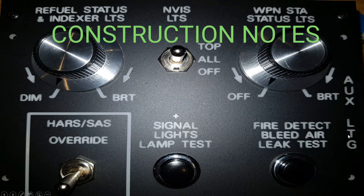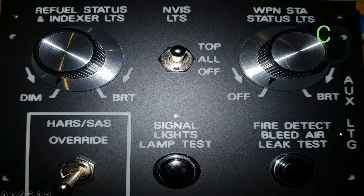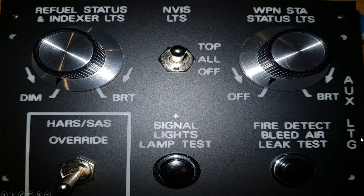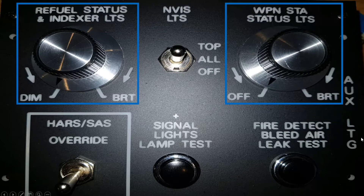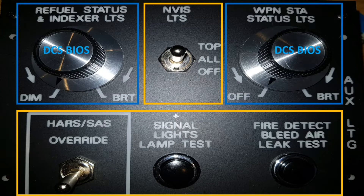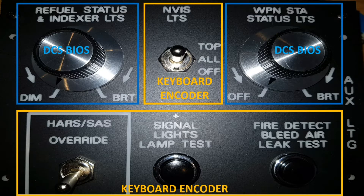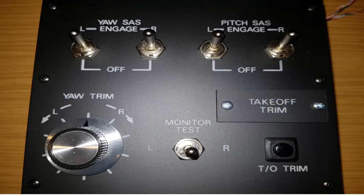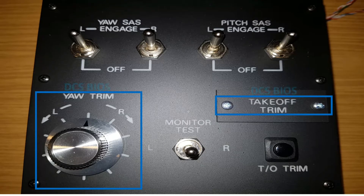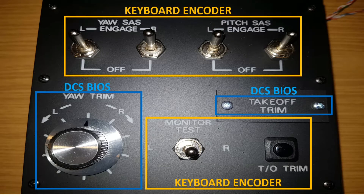In terms of the construction of these two panels, there's probably just a couple of points worth mentioning which are really different to what I've mentioned in some of the other videos. The first would be to highlight which parts of the panels go via DCS BIOS and which are interfaced via keyboard encoder. This is the auxiliary lighting panel and how that's split, and the split for the SAS panel with DCS BIOS controlling the trim and the takeoff trim indicator lights, and the keyboard encoder controlling the five toggles and the takeoff trim push button.